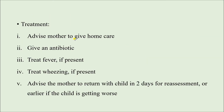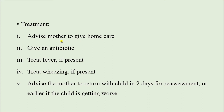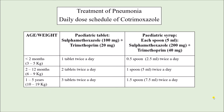For treatment of pneumonia that is not severe, we advise the mother to give home care — admission to hospital is not needed. Antibiotic is given, and if fever or wheeze is present, those are treated. The mother is advised to return after two days for assessment, or earlier if the child is getting worse. The drug of choice is cotrimoxazole, available as pediatric tablets or syrup. Each tablet contains 100 mg of sulfamethoxazole and 20 mg of trimethoprim. Each 5 ml of syrup contains 200 mg of sulfamethoxazole and 40 mg of trimethoprim — double the amount per tablet.